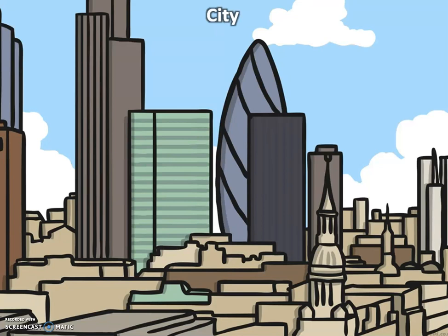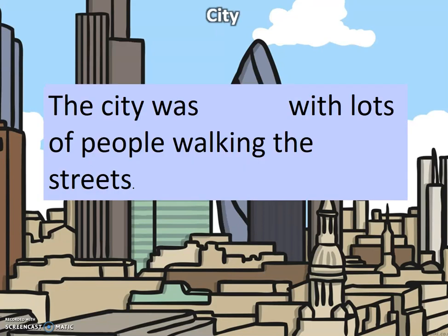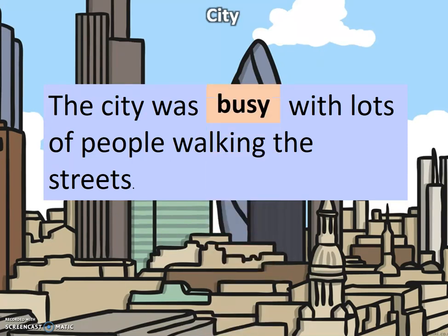So, a city. This sentence says: the city was something with lots of people walking the streets. I wonder what the blank space is going to say. The city was busy with lots of people walking the streets. So the word busy is describing the city.